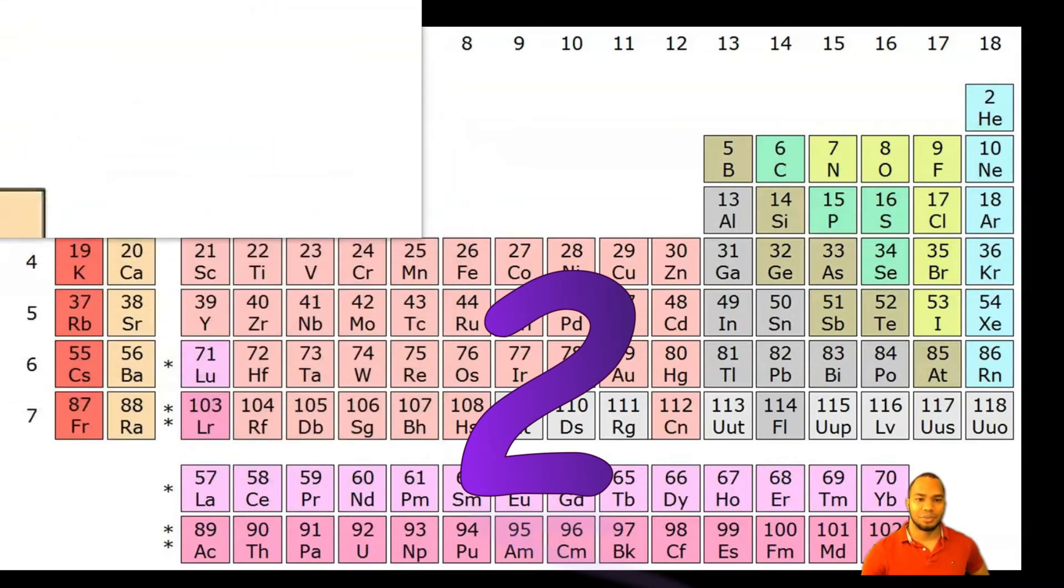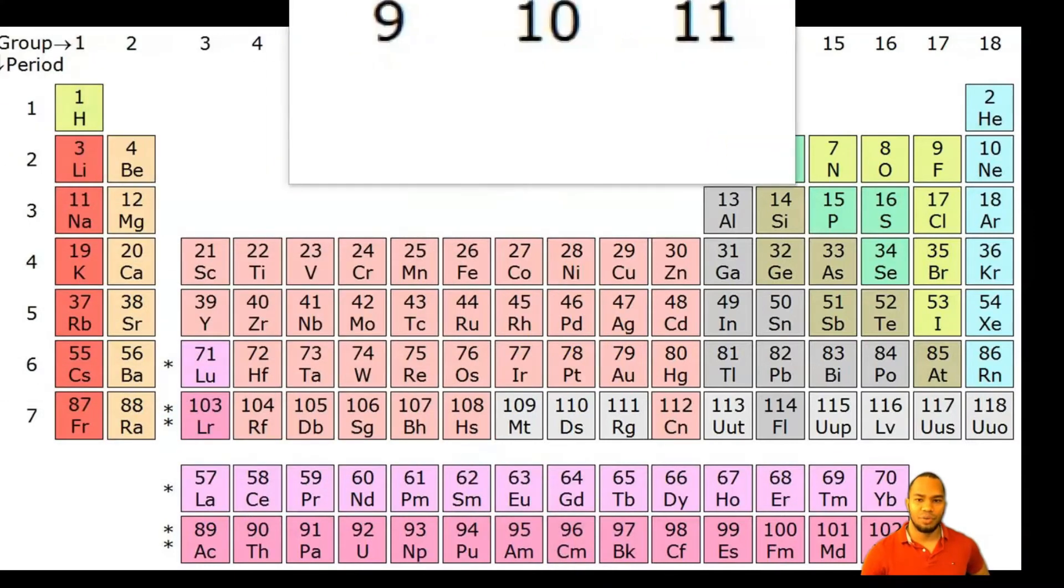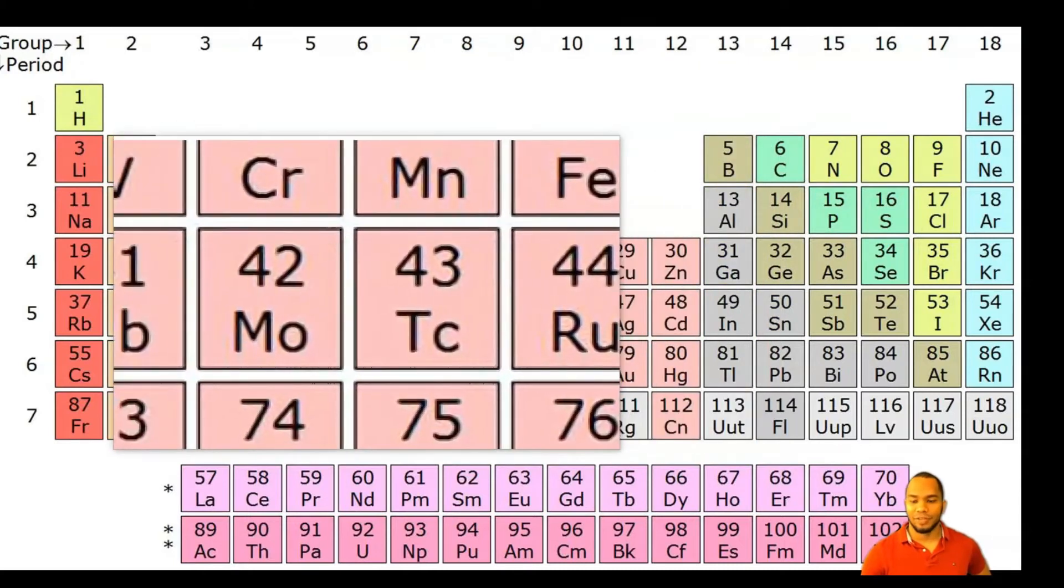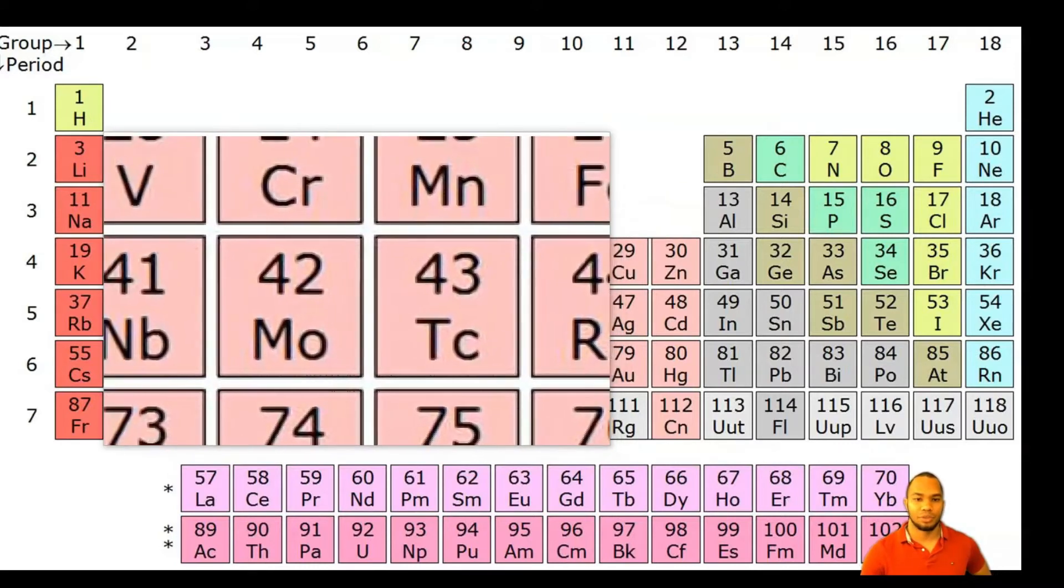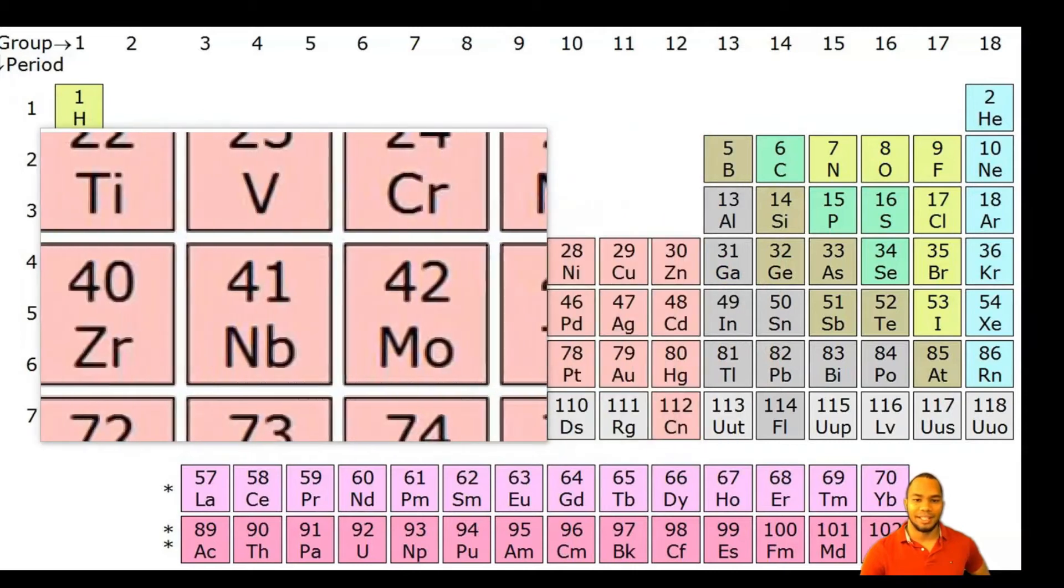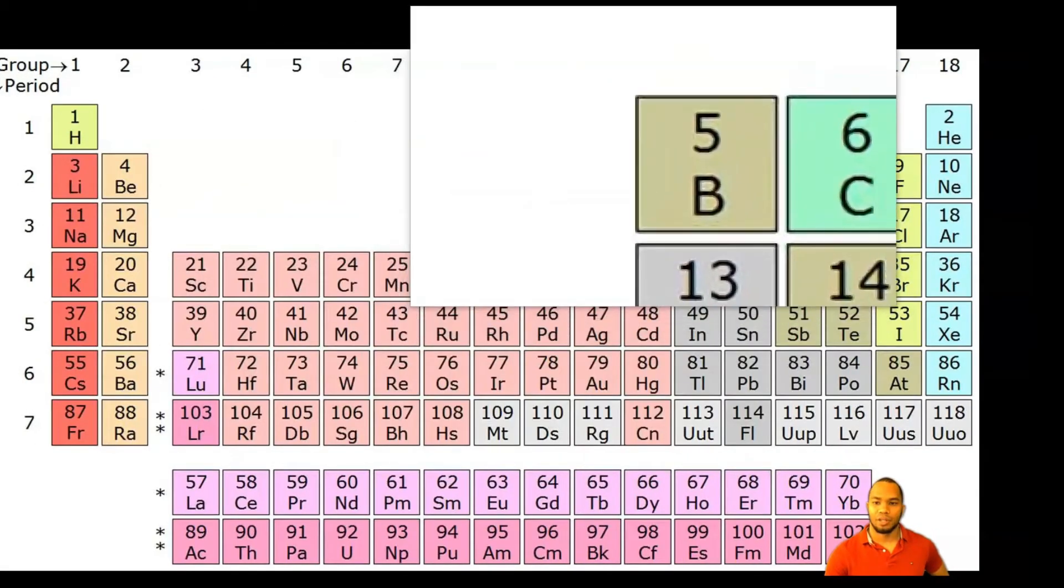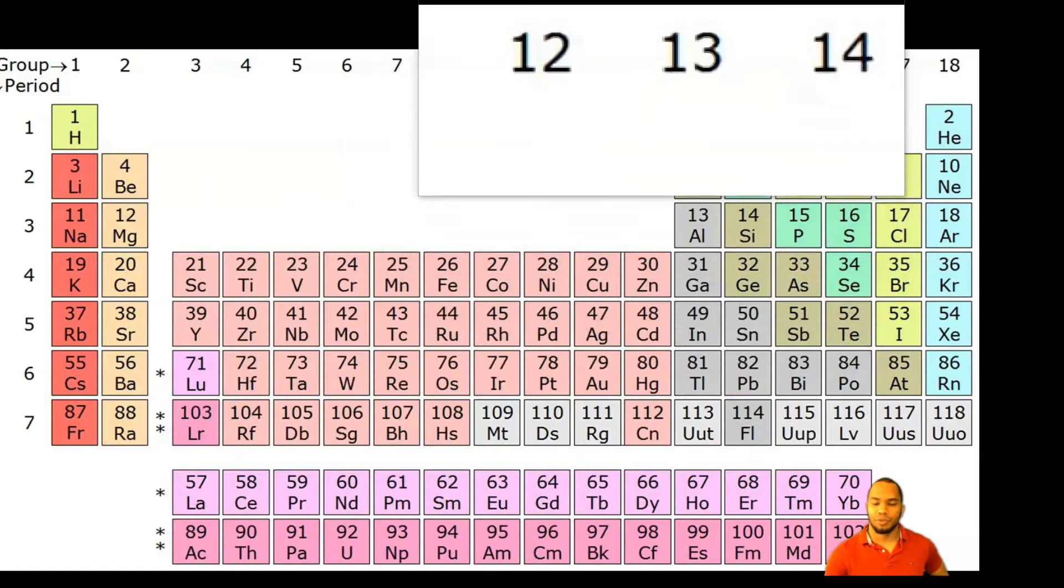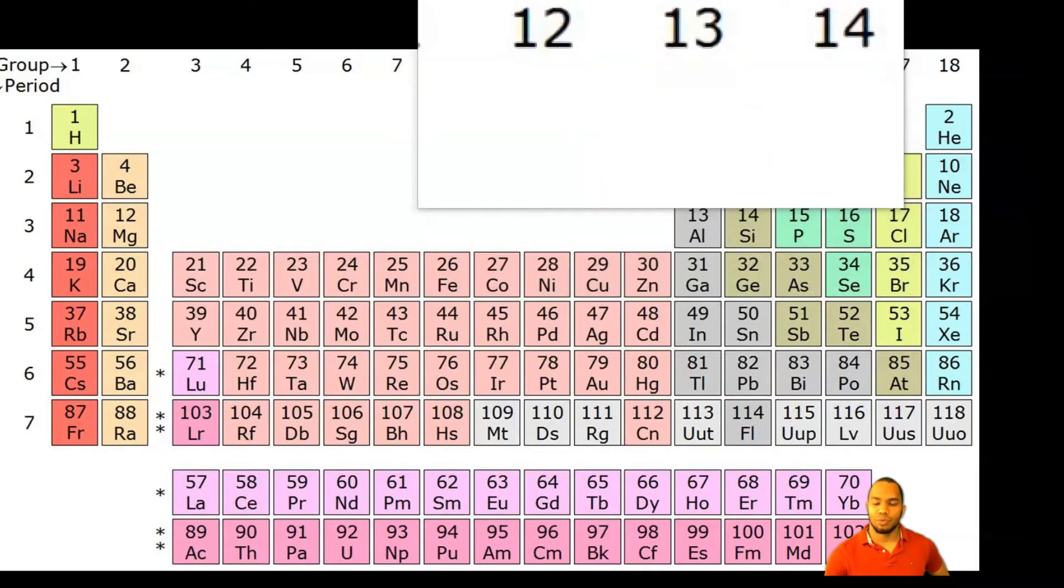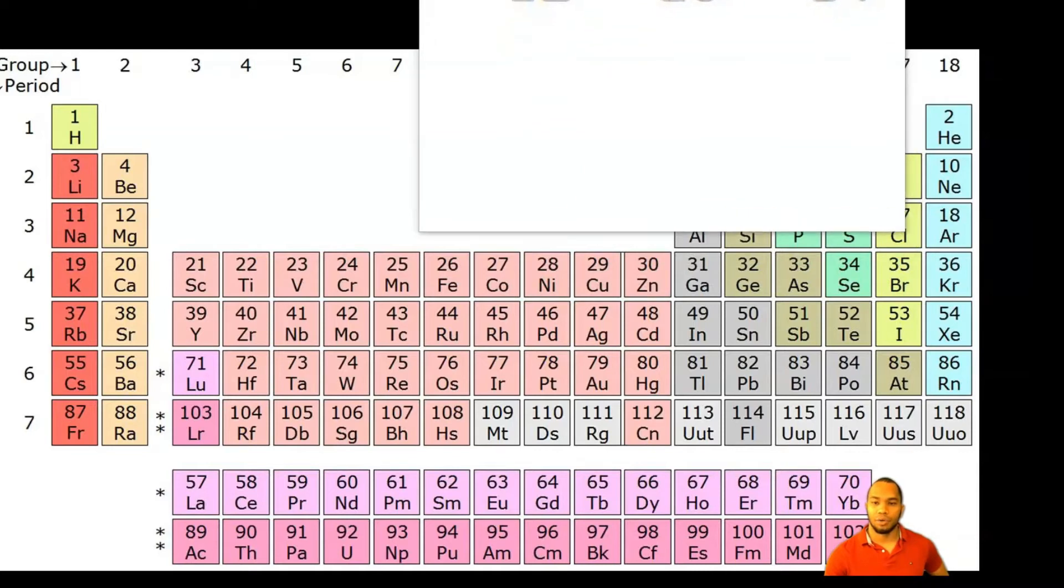In this group, group three all the way to group twelve, these elements have various valence electrons. For our purposes we don't need to remember those, so we're going to skip the elements in this block and go to group thirteen. The elements in group thirteen are going to